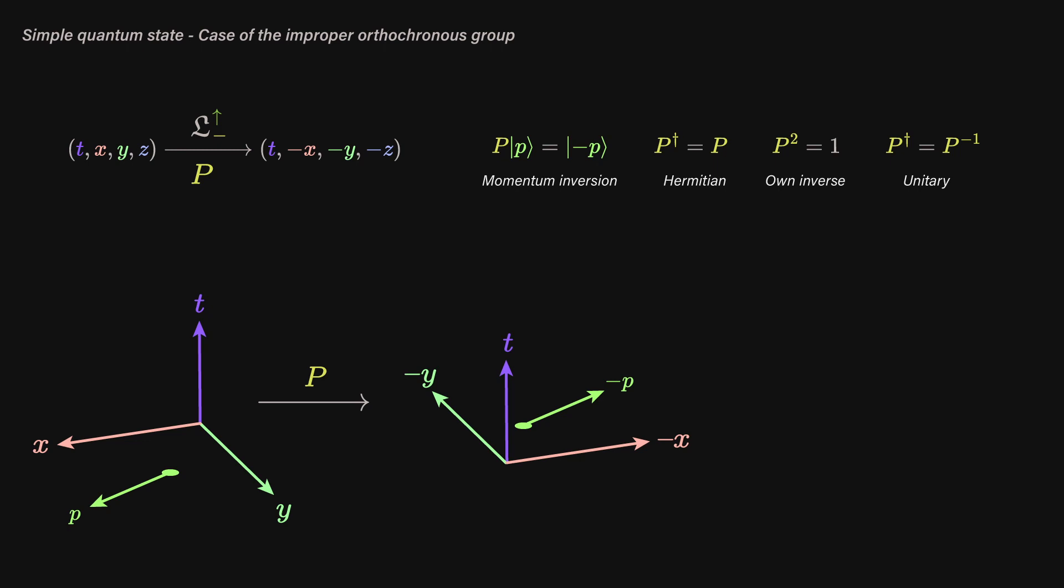It is algebraically a unitary operator. That's because, geometrically, by flipping twice the world like a mirror, we end up exactly where we started.